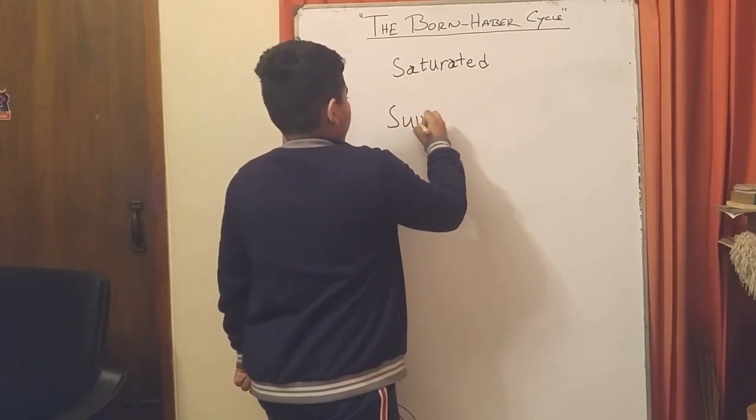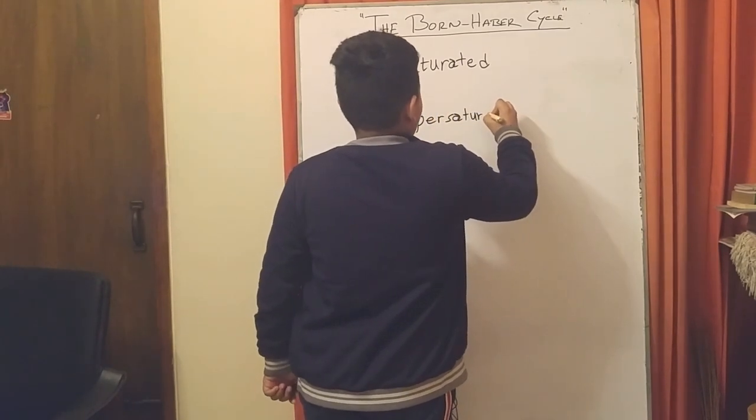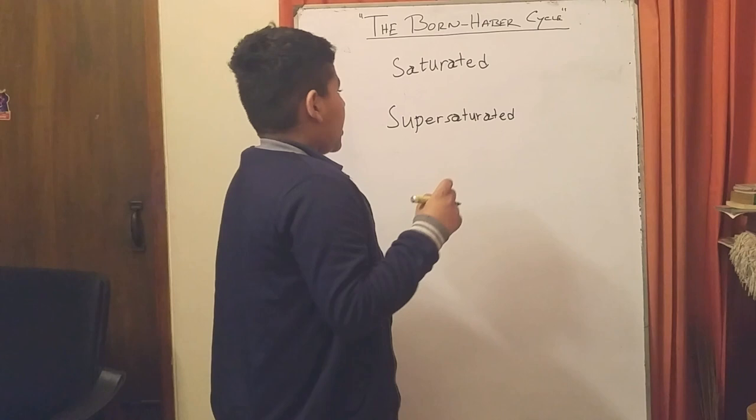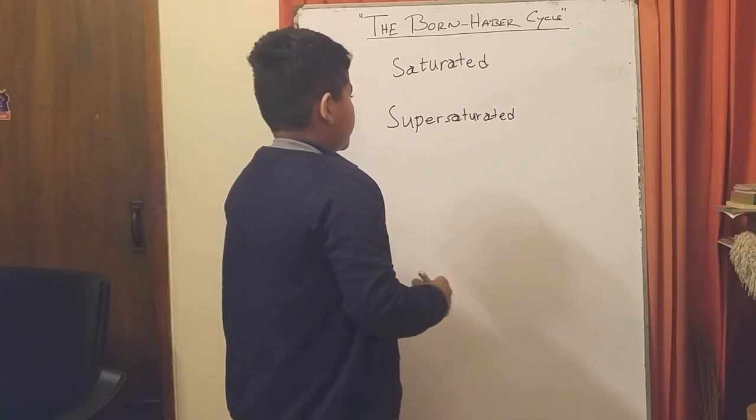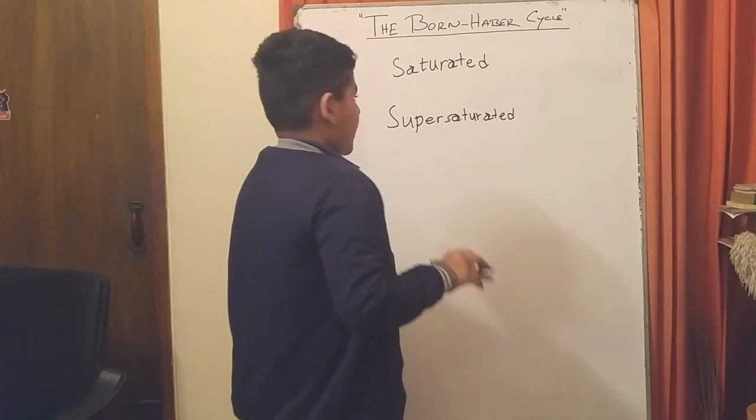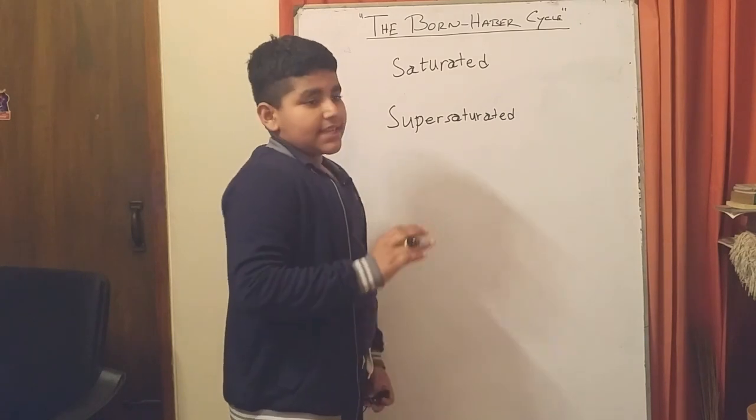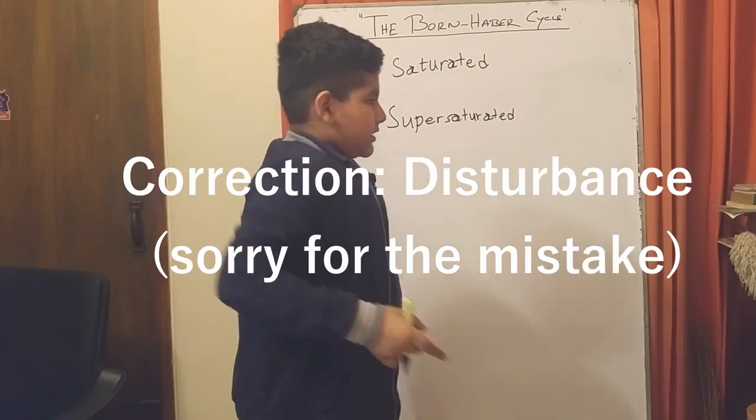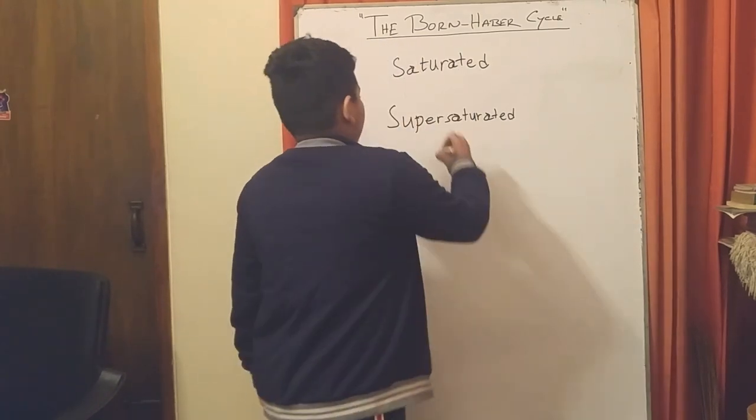And then there is a thing called supersaturated, which leaves extra ions. It's going from unsaturated to so high that the thing can't be saturated, and you allow it to cool down to make a supersaturated state. Now this is a very unstable situation.